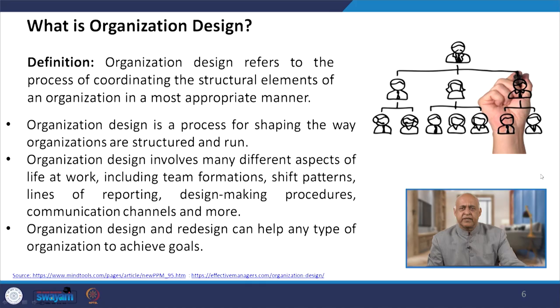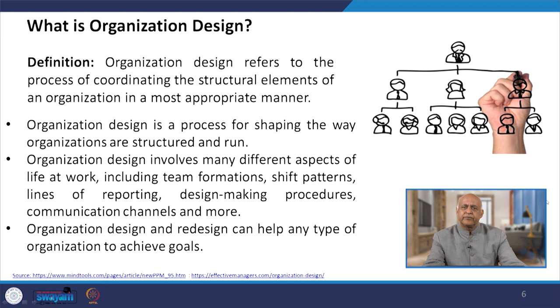Organization design is where the shaping is done. At the top there is one, then three, and then seven people. You can change this based on your organization's different requirements. The top will naturally have one, but in the second layer you may have two or one. Shaping means designing your organization. It involves team formations, shape patterns, lines of reporting, decision-making procedures, communication channels, and many more. Organization design and redesign can help any type of organization achieve its goals.